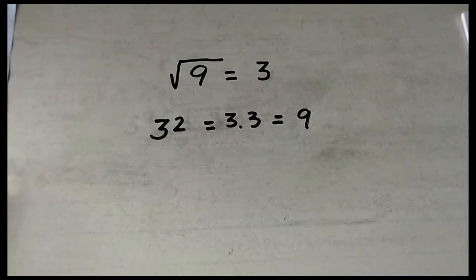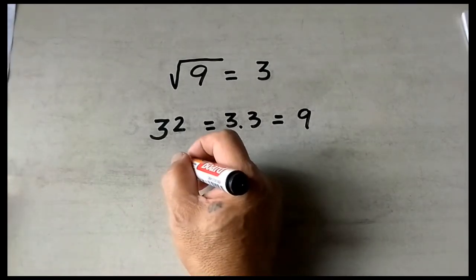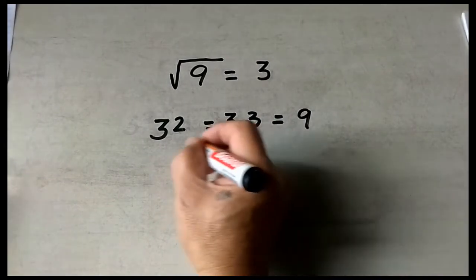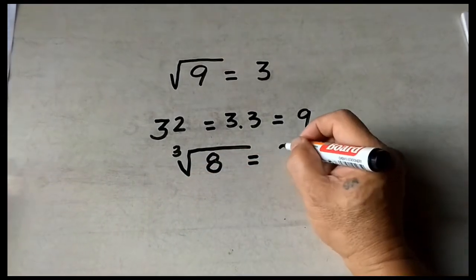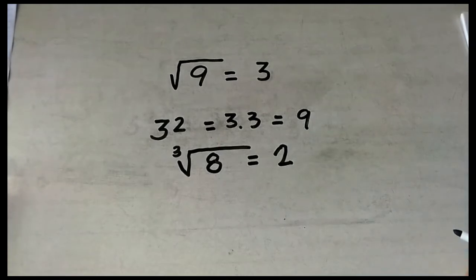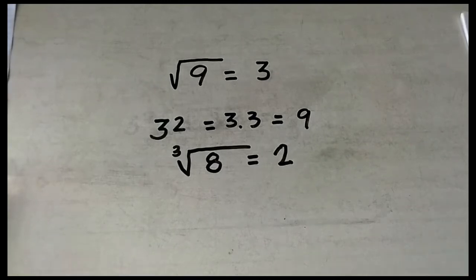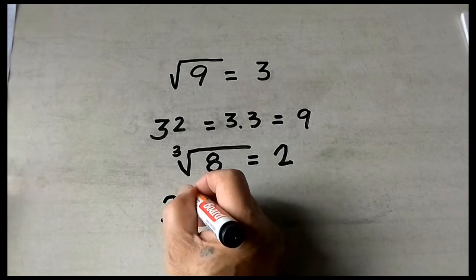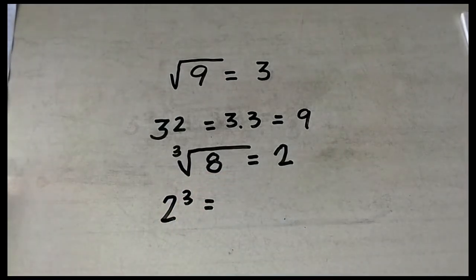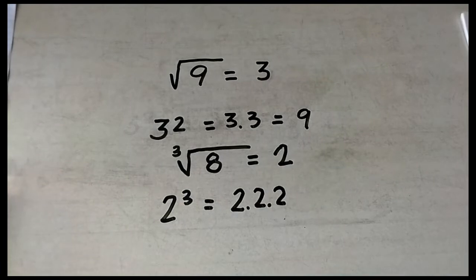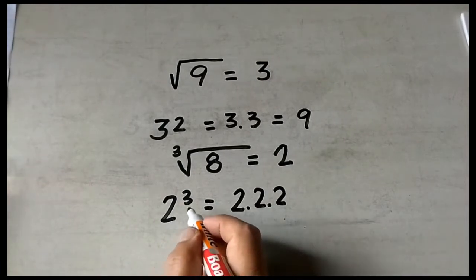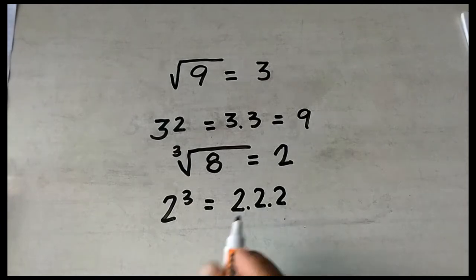How about cube root? Cube root of 8 is equal to 2, because 2 cubed is equal to 2 times 2 times 2. You multiply the base 3 times — 2 times 2 times 2 is equal to 8.